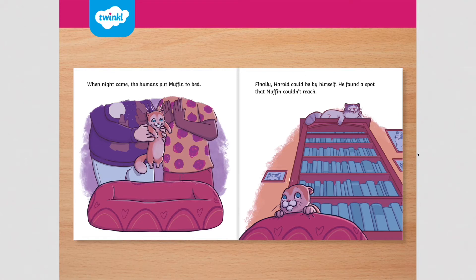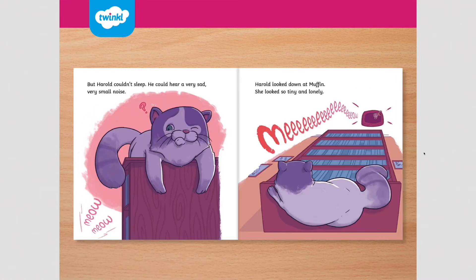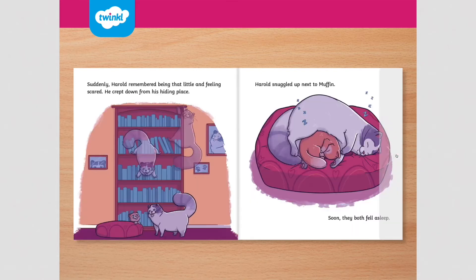Can you all see where Harold is? I wonder what Muffin is thinking. But Harold couldn't sleep. He could hear a very sad, very small noise. Harold looked down at Muffin — she looked so tiny and lonely. Suddenly, Harold remembered being that little and feeling scared. He crept down from his hiding place and snuggled up next to Muffin. Soon they both fell asleep.